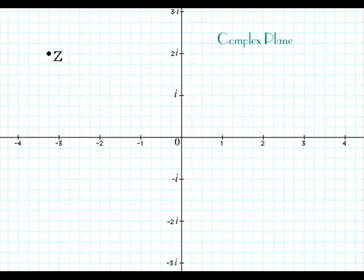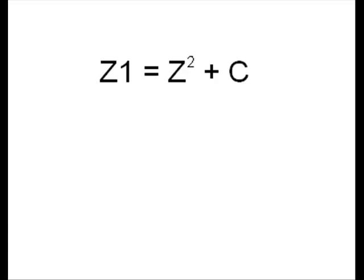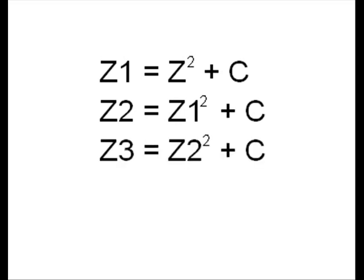Just take a point called Z in the complex plane. Let Z1 be Z squared plus C. Z2 is Z1 squared plus C. Z3 is Z2 squared plus C, and so on. If the series of Z's will always stay close to Z and never trend away.